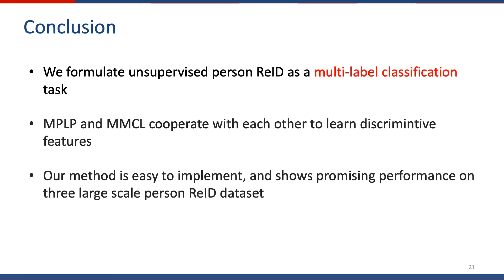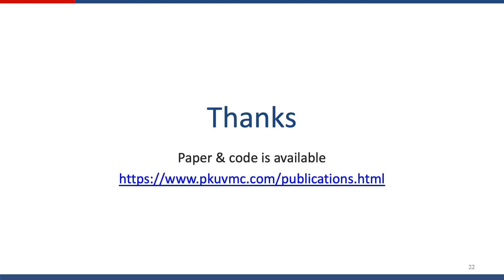In conclusion, we formulate unsupervised person re-ID as a multi-label classification task. We propose MPLP and MMCL, which cooperate with each other to learn discriminative features. Our method is easy to implement and shows promising performance on three large-scale person re-ID datasets. That's all. Thank you for listening.